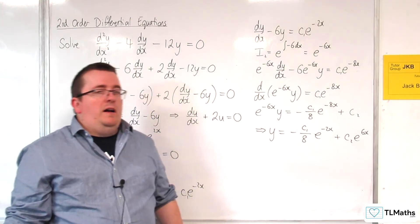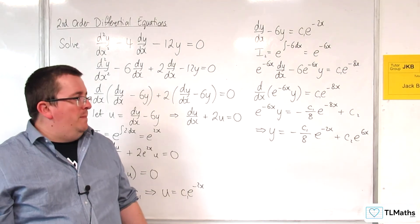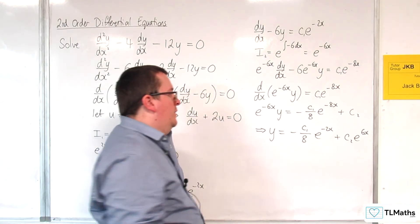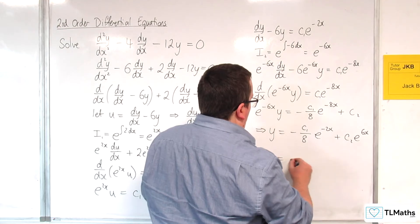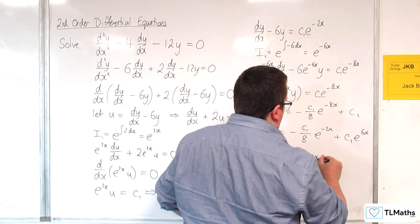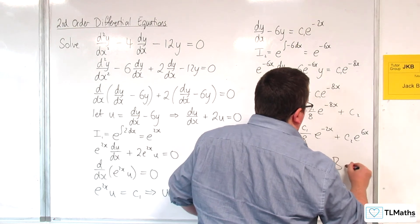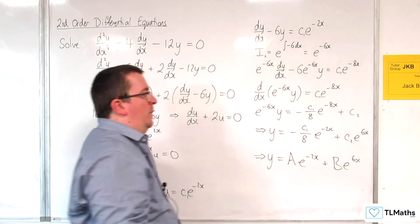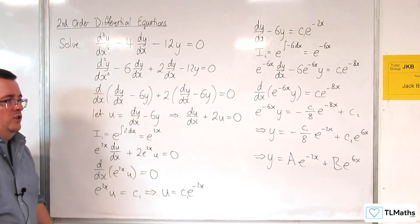I could leave it like that, but c₁/8 is a bit messy, isn't it? So what I could instead do is write that as y = Ae^(-2x) + Be^(6x), where the A is the -c₁/8, and the B is c₂.